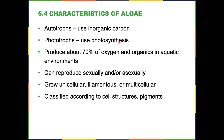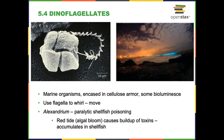Let's talk about algae. Algae are autotrophs — they use inorganic carbon. They're called phototrophs. Collectively, algae produce about 70% of oxygen and organics in aquatic environments. They really contribute to the oxygen we breathe. Just like many of the organisms we've talked about, they can reproduce both sexually and asexually; they can grow single-celled or be enormous. We typically classify them according to cell structures and the pigments they use — there are different types of photosynthetic pigments.